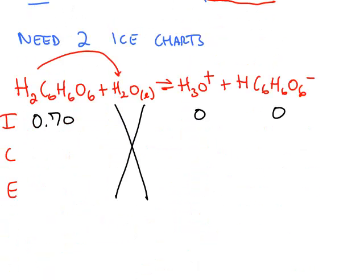So here's the first ICE chart that we need. The weak acid donates a proton to water. We get an equilibrium that makes hydronium and the conjugate base of the original acid.